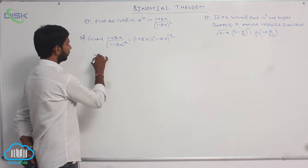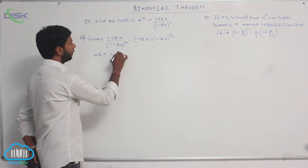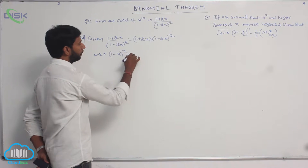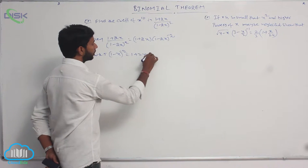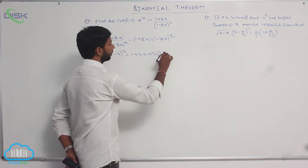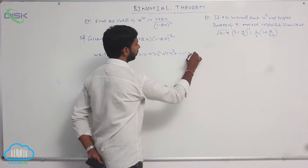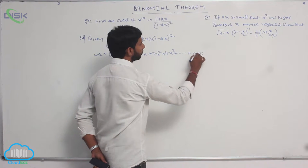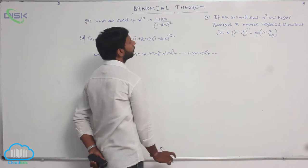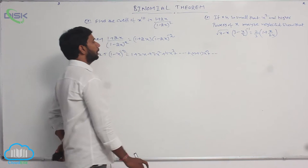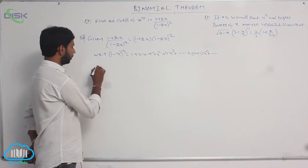We know the formula of 1 minus x whole power minus 2, which is equal to 1 plus 2x plus 3x squared plus 4x cubed plus and so on, with the general term being (n plus 1) into x power n. Apply this formula.